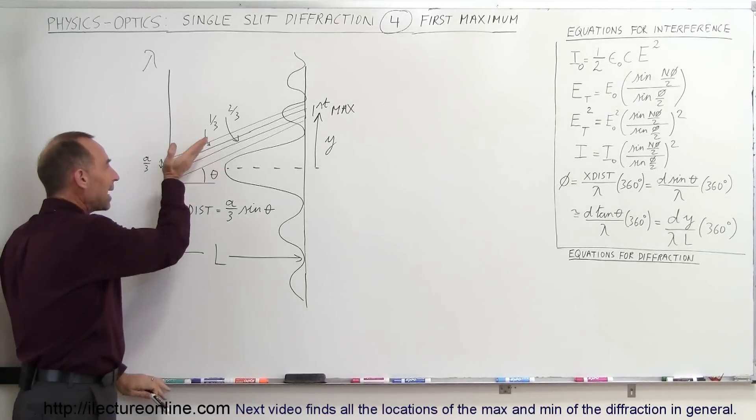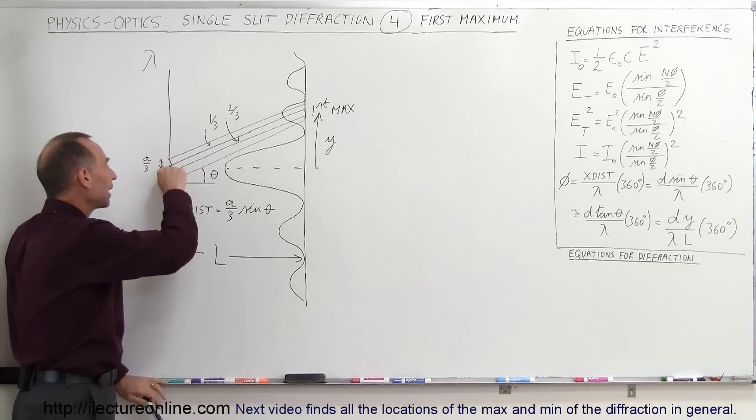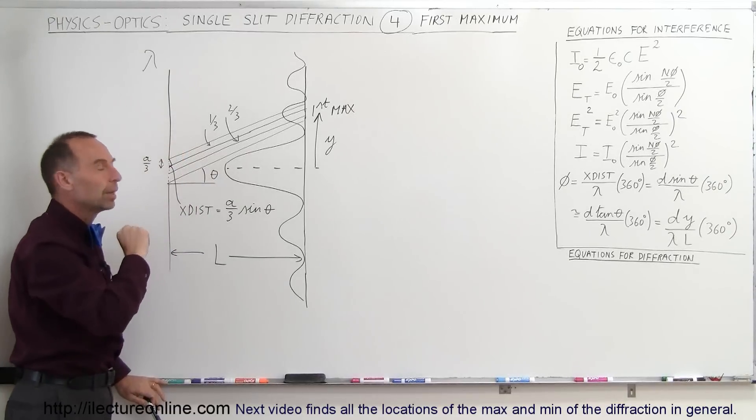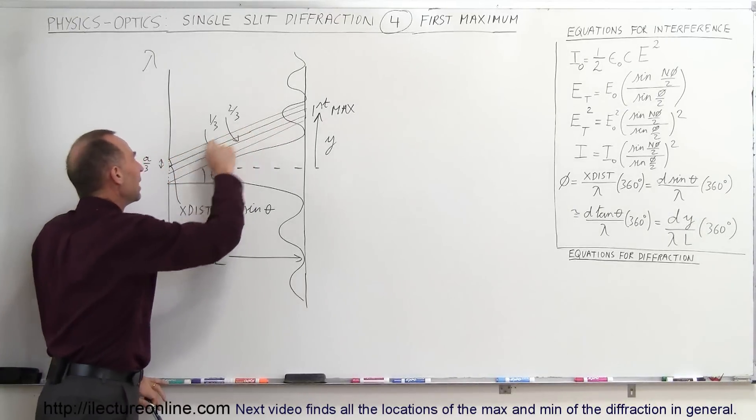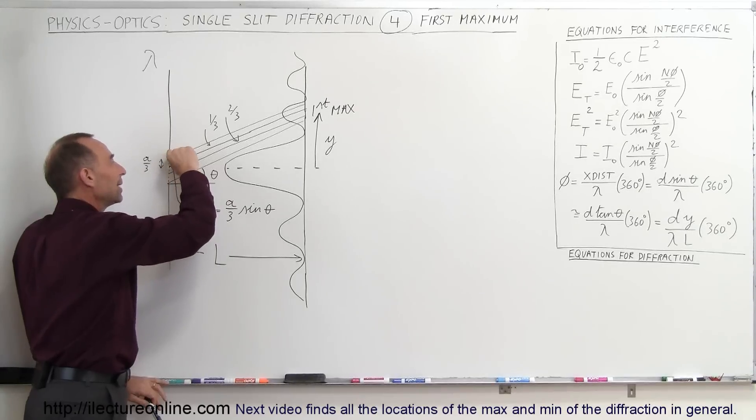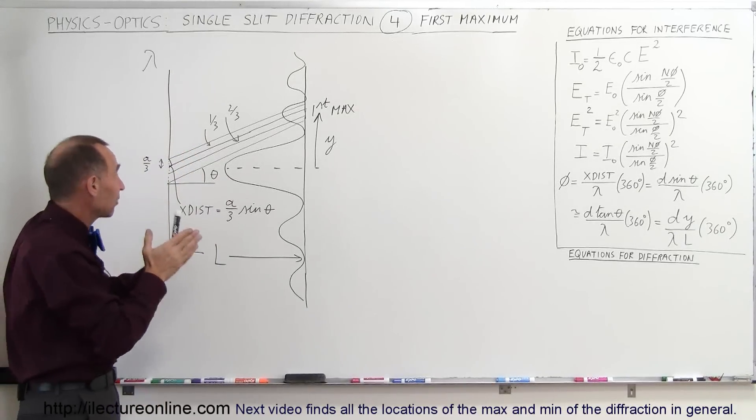Well, if you have the correct angle so that this extra distance right here is exactly equal to half wavelength, and that location right here is exactly one-third into the beam. If that's true, then you know that this ray right here at the very top of the beam, and this ray right here at the very top of the second one-third of the beam, there will be exactly half a wavelength out of phase, and when they're half a wavelength out of phase, they will cancel each other out.